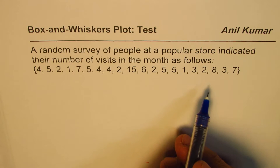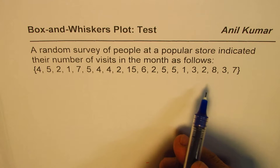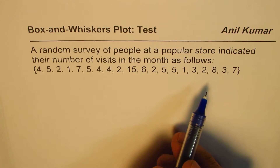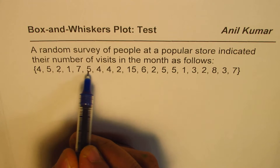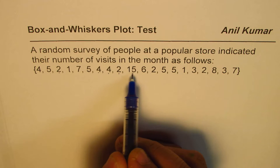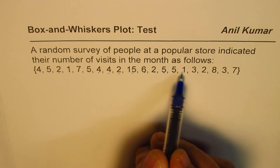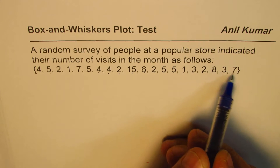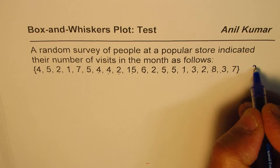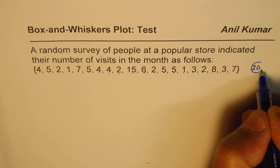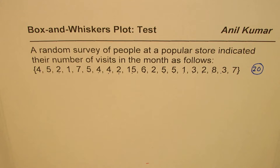Whenever you are given numbers, it's a good idea to first count them and see how many you have. In this case: 1, 2, 3, 4, 5, 6, 7, 8, 9, 10, 11, 12, 13, 14, 15, 16, 17, 18, 19, 20 — we are dealing with a set of 20 numbers. The second thing you need to do is arrange them in order.